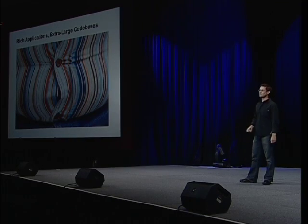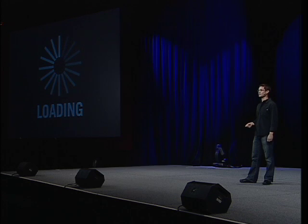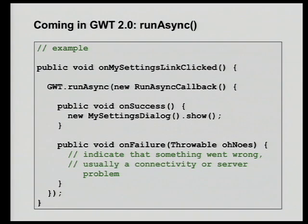As you add more functionality, your code base grows, and that in turn means your users are going to wait for your application to finish loading. So you need a way to split up all those JavaScript files across multiple files so your user can get started without having to wait. However, manually splitting JavaScript can be very tedious — you have to get the dependencies correct, it takes a long time. That's why in the next version of Google Web Toolkit we're going to do it for you with something called developer-guided code splitting, also known as run async.